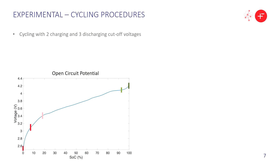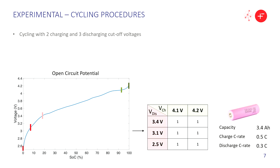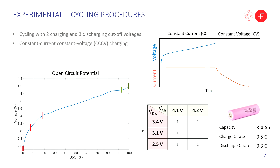In this study we are cycling the cells with two different charging and three different discharging cutoff voltages, giving us six different test conditions. The charging scheme we're using is called constant current constant voltage, or CCCV charging. It's a two-phase charging scheme where in the first phase we apply a constant current which causes our voltage to rise to our charging cutoff voltage; at that point we hold our voltage in the constant voltage phase and allow our current to fall to a predetermined current cutoff value.